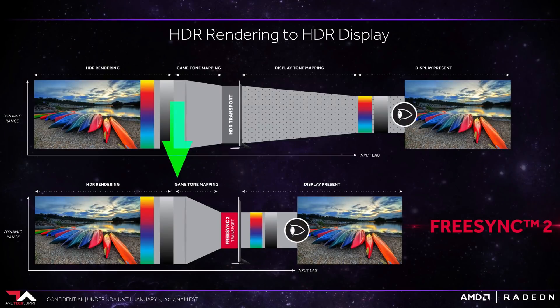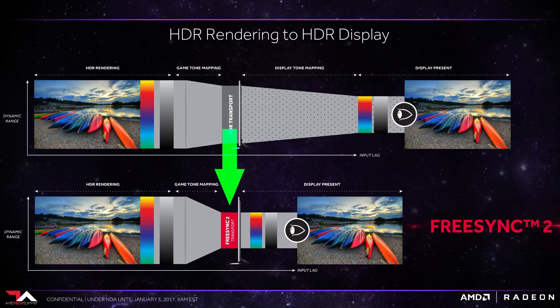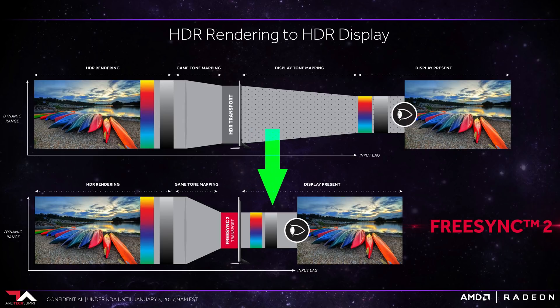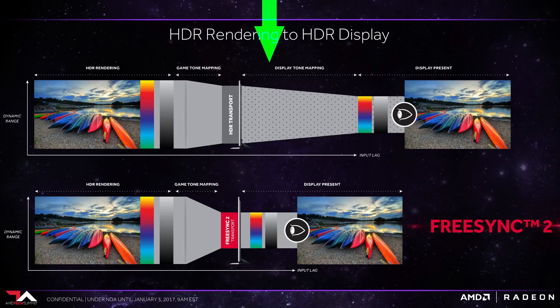The idea was the games themselves would tone map directly to what the display was capable of presenting, with a FreeSync 2 transport passing the data straight to the monitor without the need for further processing on the monitor itself. This was in contrast to standard HDR tone mapping pipelines, where games tone map to an intermediary format before the display figures out how to tone map to its own capabilities.